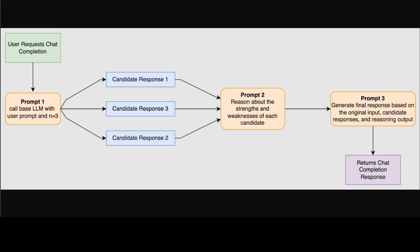The screen which you are looking at is showing you how a user requests a chat completion, then a first prompt from the model calls a base LLM with user prompt from the green box, and then three candidates. So basically, prompt one is generating three candidate completions in parallel by calling the chosen base model with n equals three and a high temperature to promote output diversity.